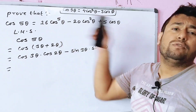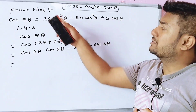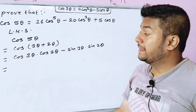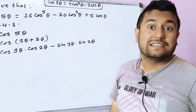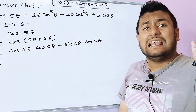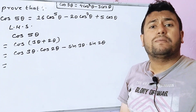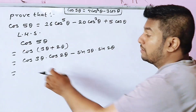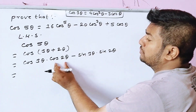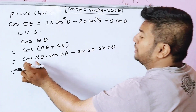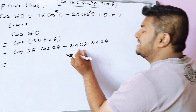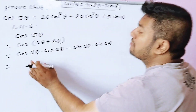This is the expansion where we have the cos and cos form. So we have cos 3 theta into cos 2 theta, minus sin 3 theta times sin 2 theta. Now we apply the cos 3 theta, cos 2 theta, and sin 3 theta, sin 2 theta formulas.